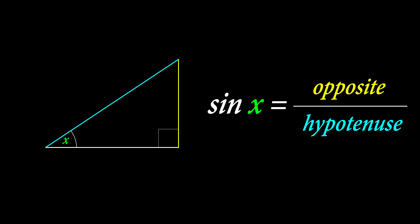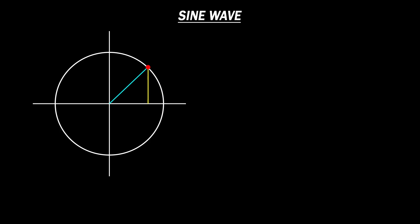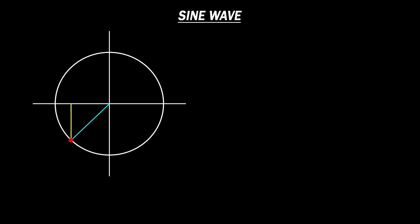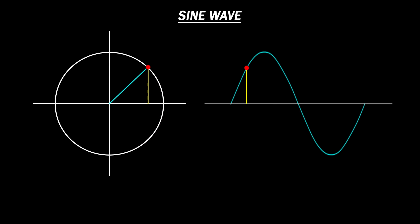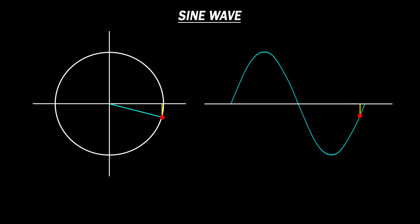When the angle of the right angle triangle changes, the value of sine changes. If we keep the hypotenuse the same size and go through all angles through 360 degrees, it forms a perfect circle. If we then plot a graph of the value of sine over all these angles, we get a perfect sine wave.